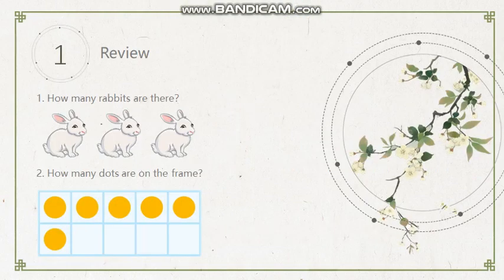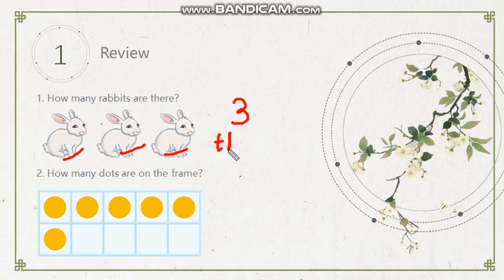First, review. How many rabbits are there? Whoa, so cute. I love rabbits. How about you? Let's do the counting first. One, two, three. So we have three rabbits here. Let's spell the word three as well: T-H-R-E-E. Three.